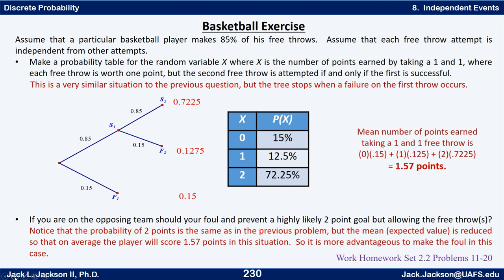In the one-and-one situation there are still the same things to consider about whether to foul, but the expected value is a little lower at 1.57 versus 1.7, so it's slightly more advantageous to foul in this situation — though there are still other factors to consider.